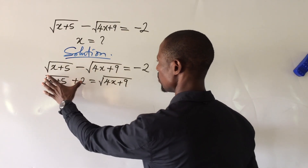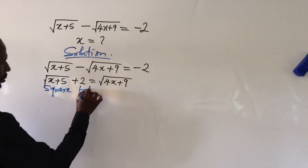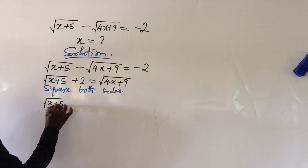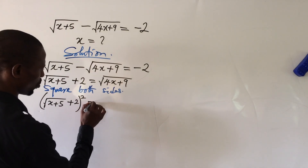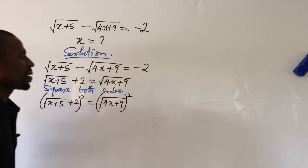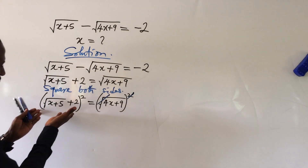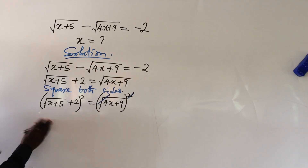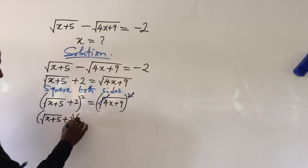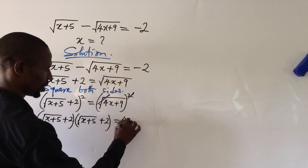We can now square both sides. Squaring the left side, we write it as the square root of (x + 5) plus 2, all in bracket, times itself: bracket square root of (x + 5) plus 2 bracket, times bracket square root of (x + 5) plus 2 bracket, equal to 4x + 9.